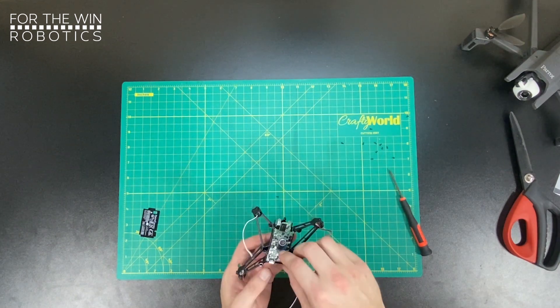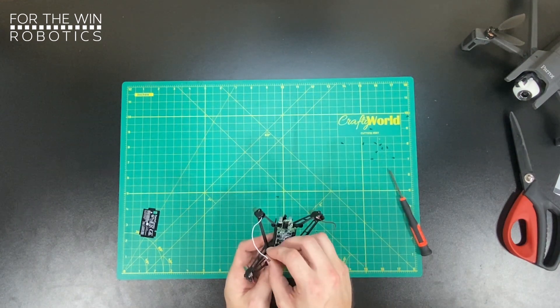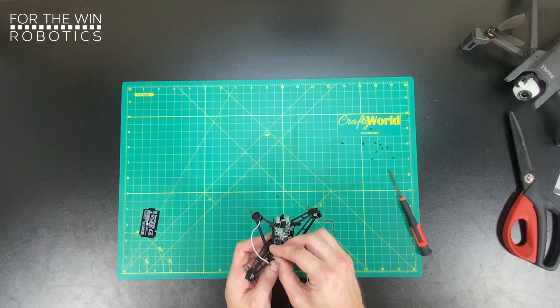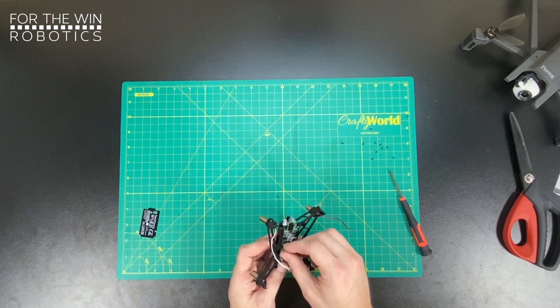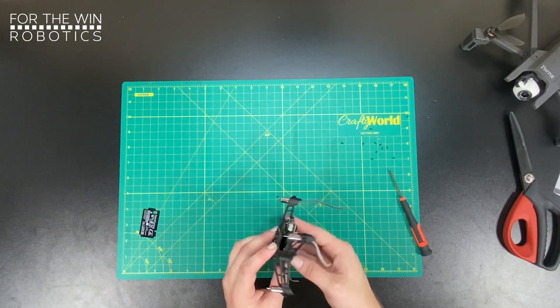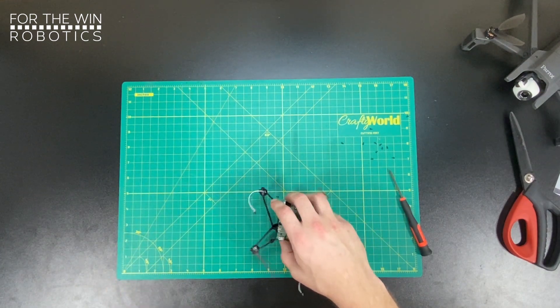So the only thing left to do is to slip the antenna of the motherboard through this little hole on the frame where it can receive more exposure and not be trapped within the plastic of the drone. We're mostly done with this right now.